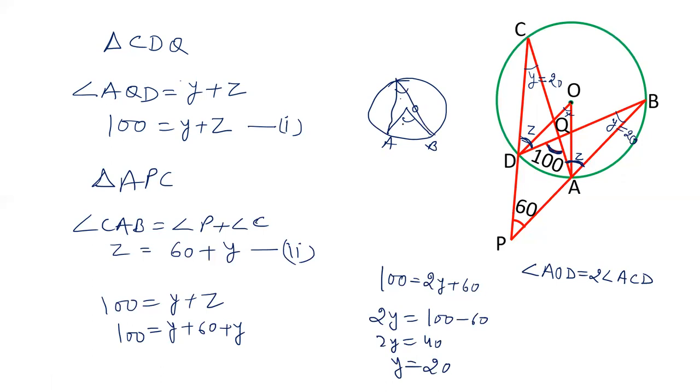So this angle, suppose this is theta, then this is 2 theta. Angle at the center is twice the angle subtended by the arc. AOD we have to calculate, which is X. ACD we have calculated, which is 20. So 2 times 20 is 40. Value of X is 40.